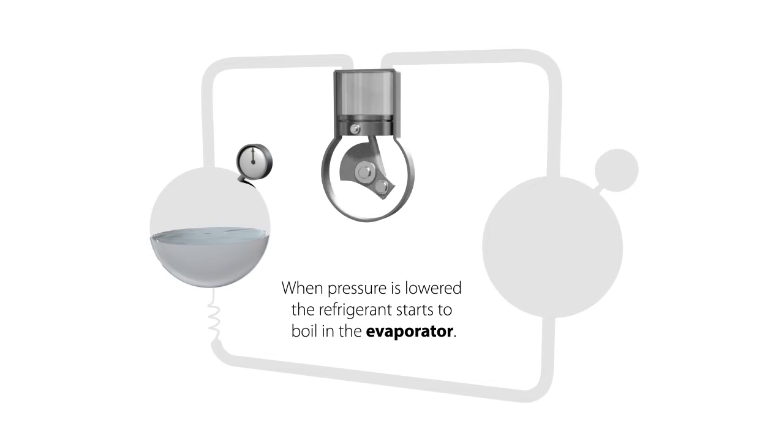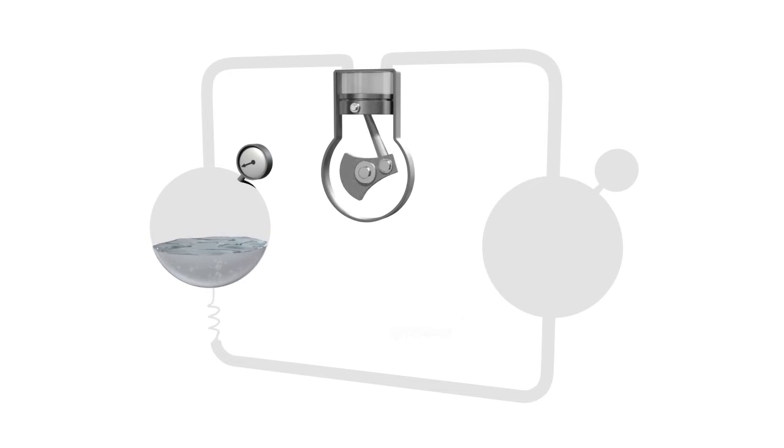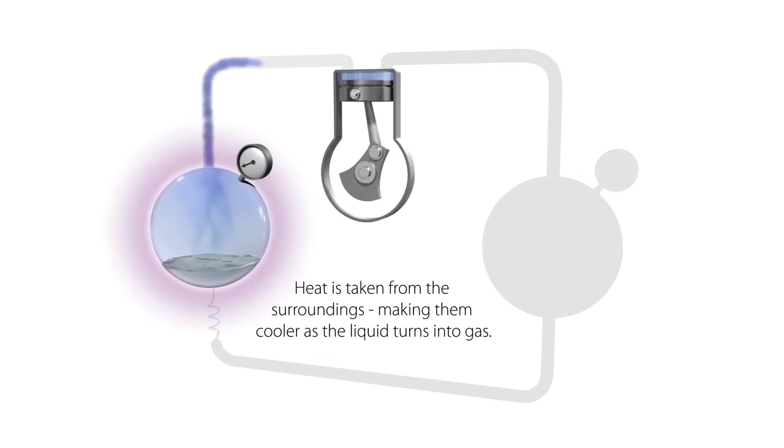When pressure is lowered, the refrigerant starts to boil in the evaporator. Heat is taken from the surroundings, making them cooler as the liquid turns into gas.